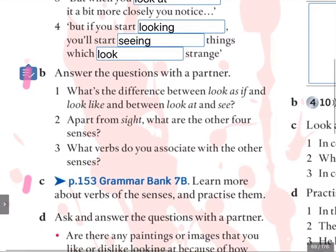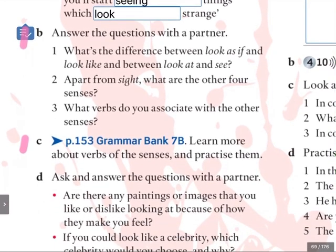Let's have a look now at exercise B. It says: answer the questions with a partner — I'll be your partner, of course. Number 1: what's the difference between 'look as if' and 'look like'? And what's the difference between 'look at' and 'see'? Number 2: apart from sight, what are the other four senses? And number 3: what verbs do you associate with the other senses?